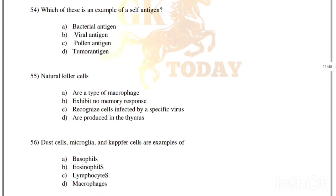Which of these is an example of a self antigen? Bacterial antigen, viral antigen, pollen antigen, or tumor antigen. Correct answer is option D, tumor antigen. Natural killer cells exhibit no memory response — correct answer is option B.